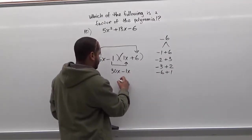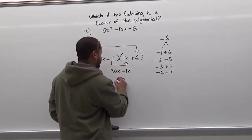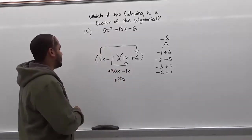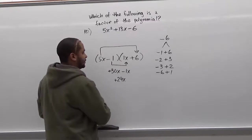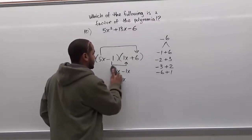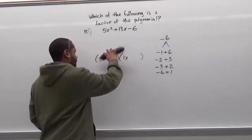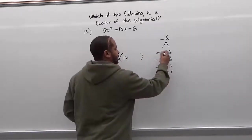Here we see 30x minus 1x is 29x which is too big. We're looking for a 13x and this doesn't seem to be giving us the sum that we want. So we're going to try again with another set. So we know this set of factors don't work.